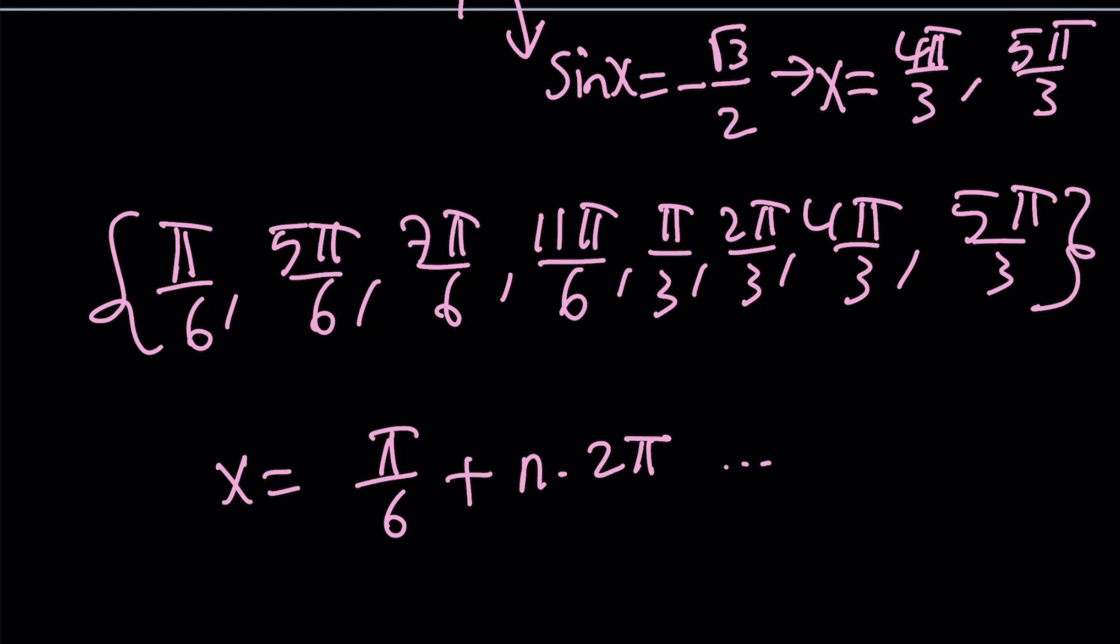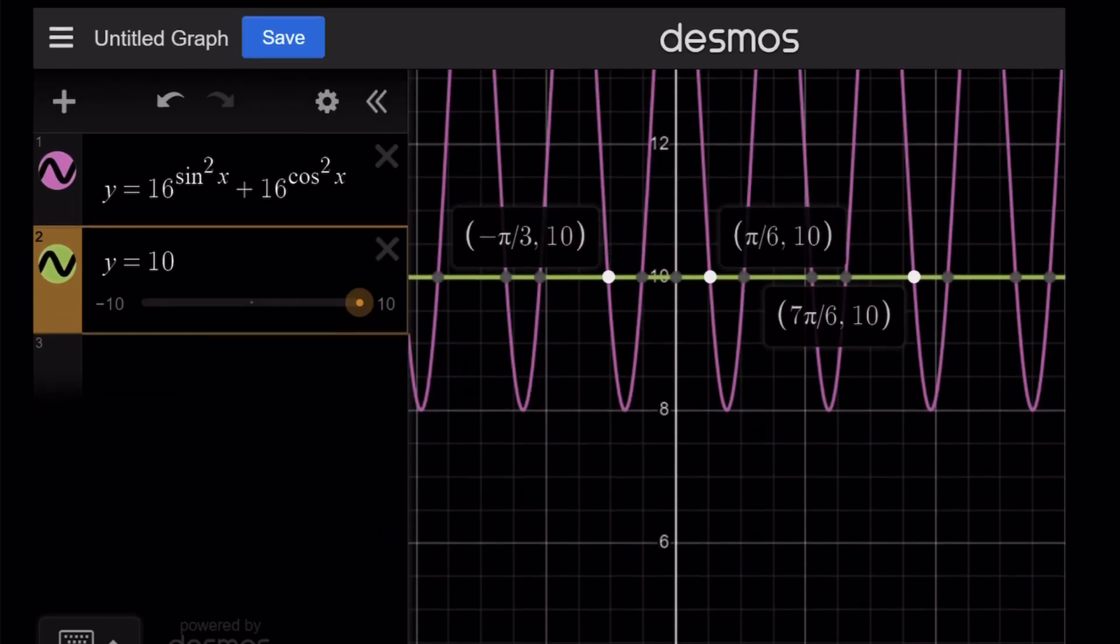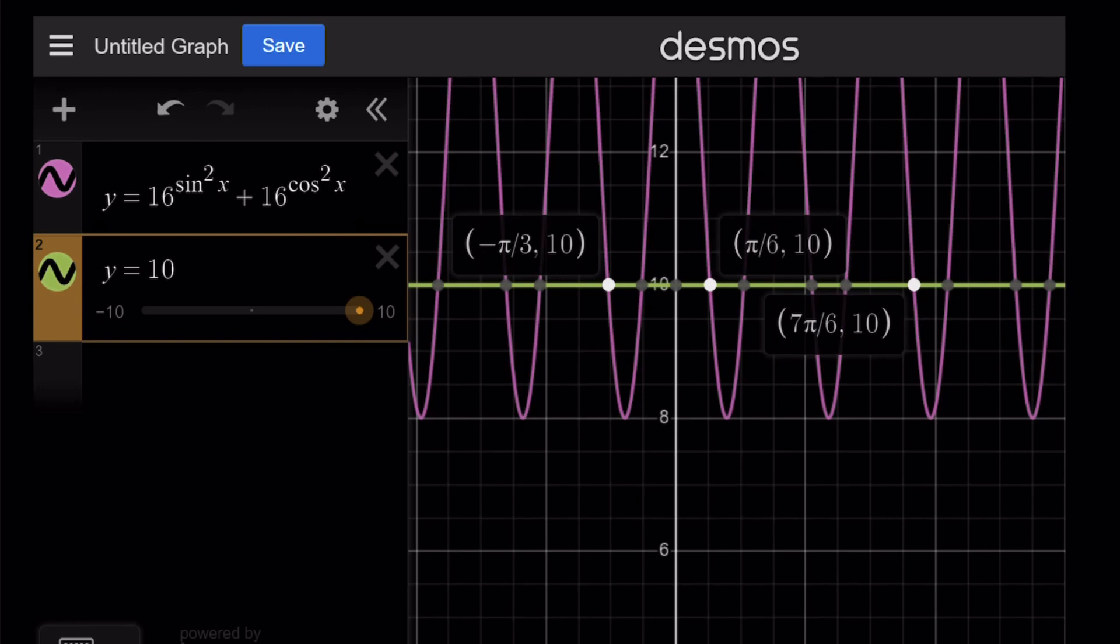And now let's take a look at the graph and you'll see all the solutions pretty much. Negative π/3, π/6, 7π/6, and so on and so forth. And this is what the graph looks like. And this brings us to the end of this video.